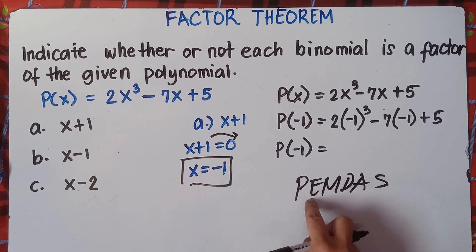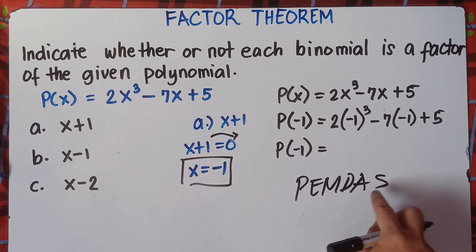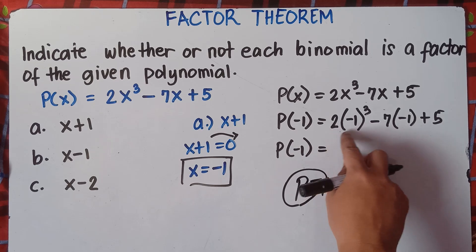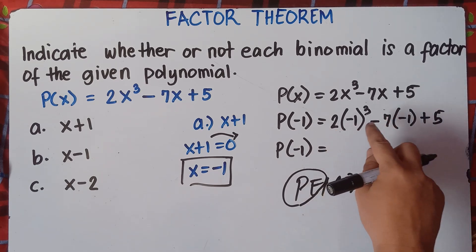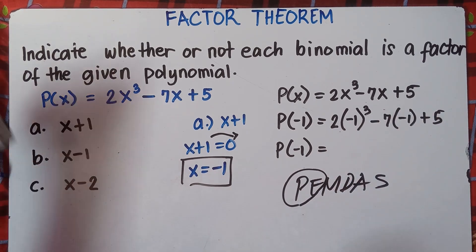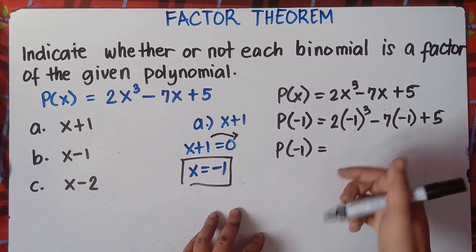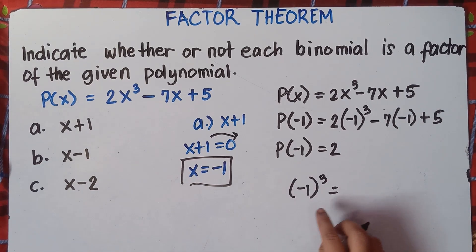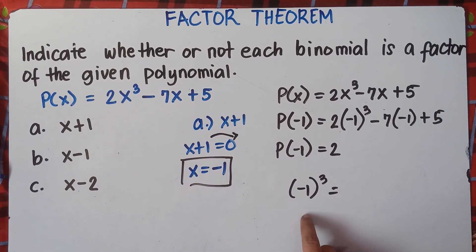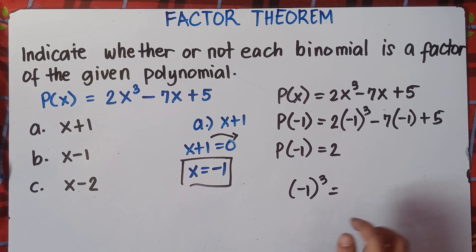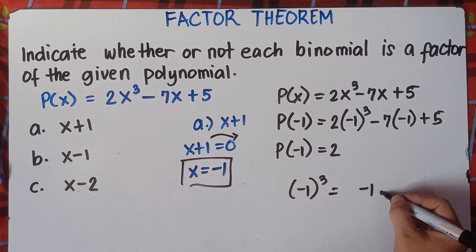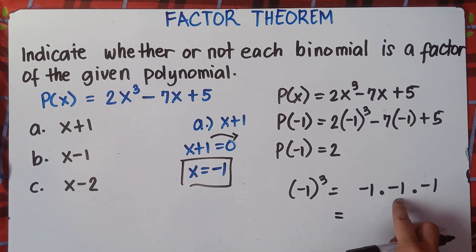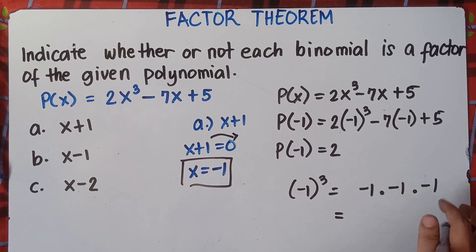PEMDAS: parenthesis, exponents, multiplication, division, addition, subtraction. Exponents come before multiplication, so do not multiply 2 and negative 1 yet. First evaluate (negative 1) raised to the power of 3. That means negative 1 times negative 1 times negative 1. Negative 1 times negative 1 is positive 1, times negative 1, that is negative 1. So (negative 1)³ equals negative 1.